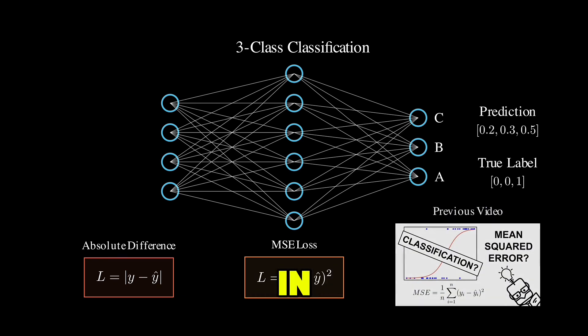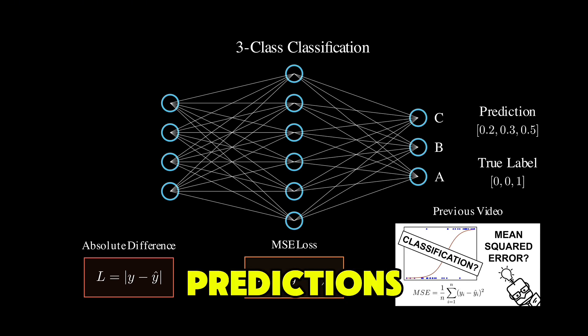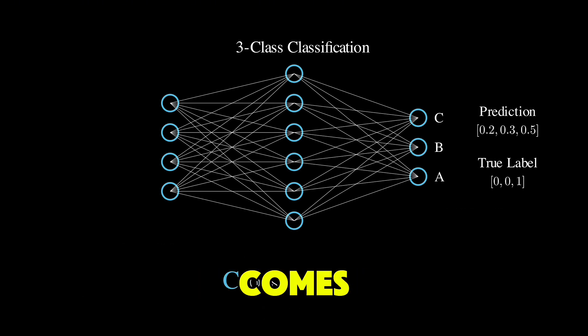I've explained why in another video. Essentially, these loss functions don't create strong enough gradients when our predictions are confidently wrong. This is where cross-entropy comes in.